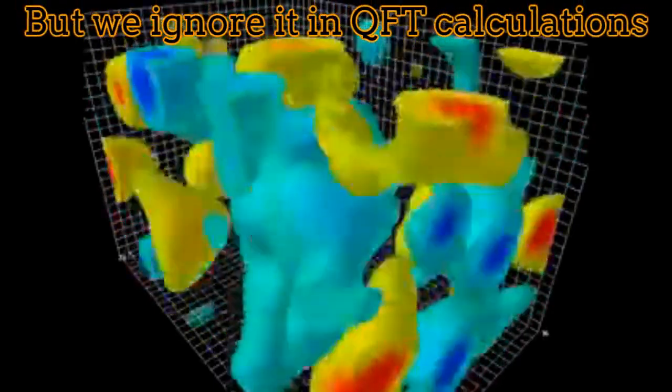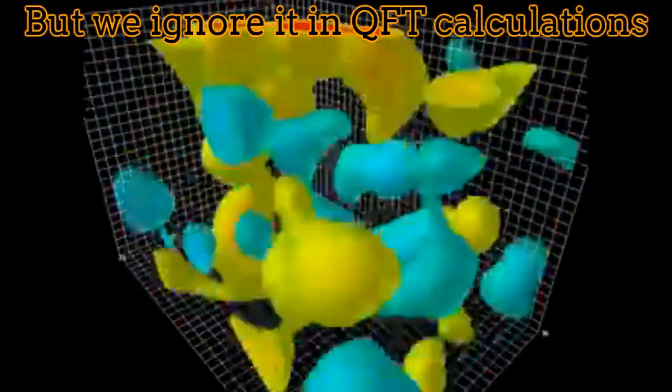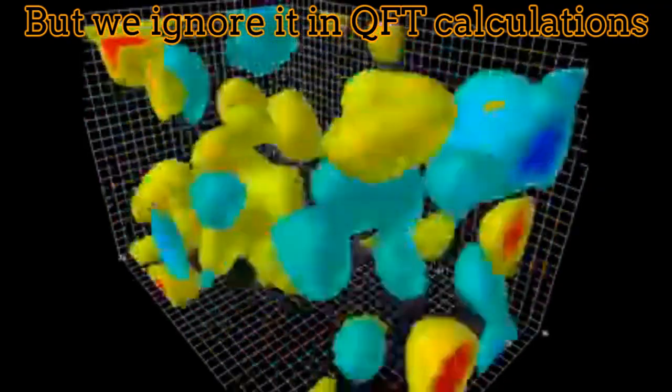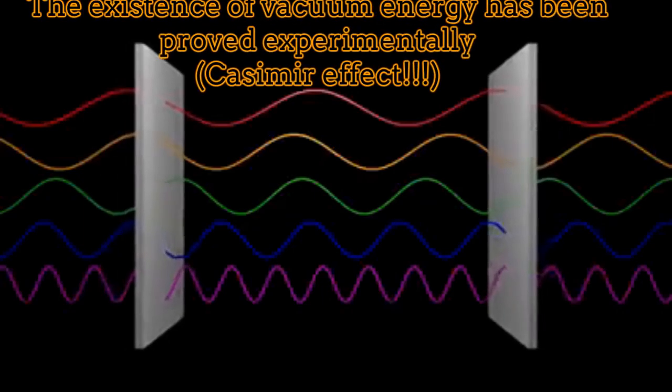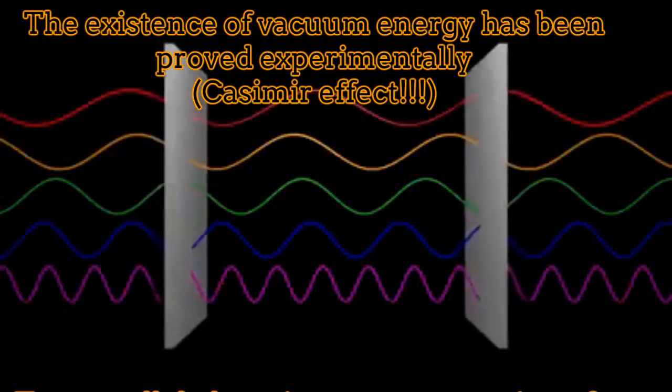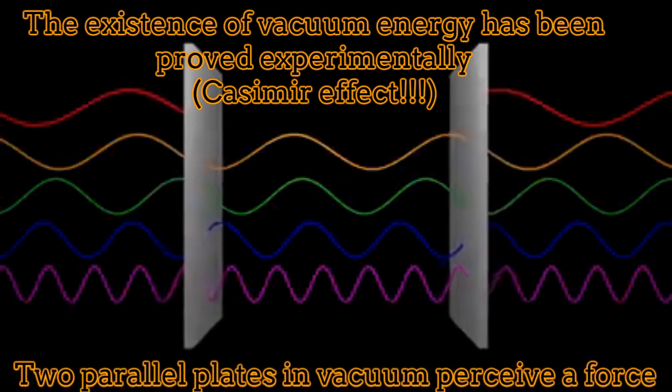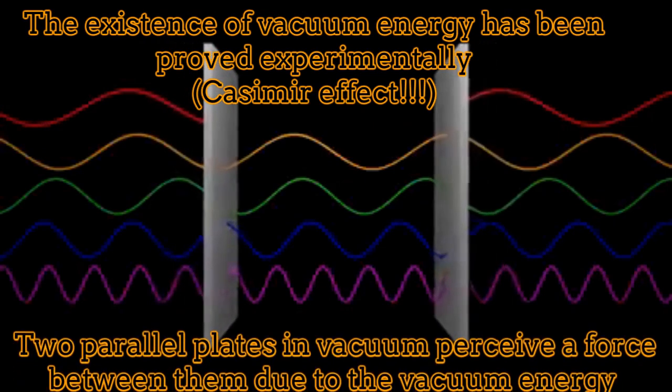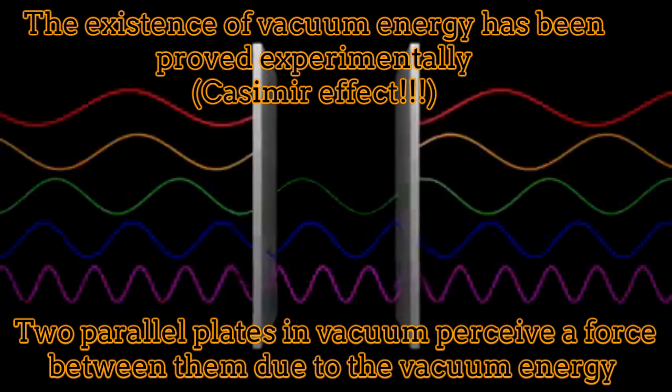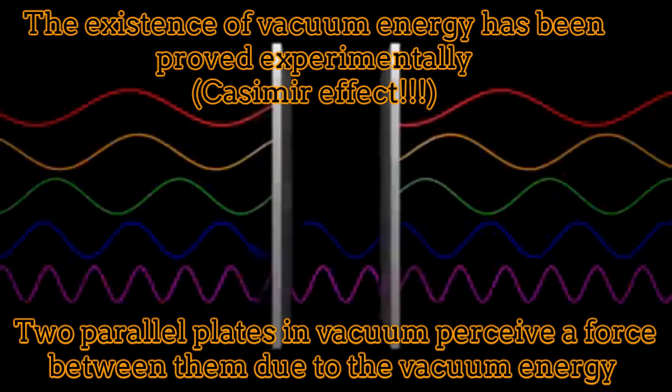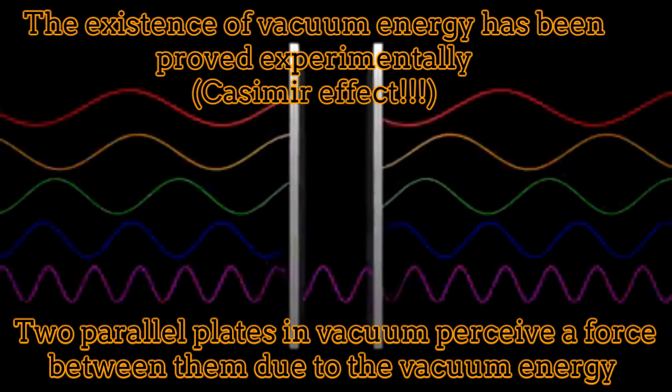However, in quantum field theory, since normally we deal with electrodynamics, we ignore this vacuum energy. The existence of the vacuum energy has been proved experimentally. The Casimir effect is the experimental evidence of this fact. When you put two parallel plates together in absolute vacuum, they perceive a force between each other. This force is reproduced by the vacuum energy.